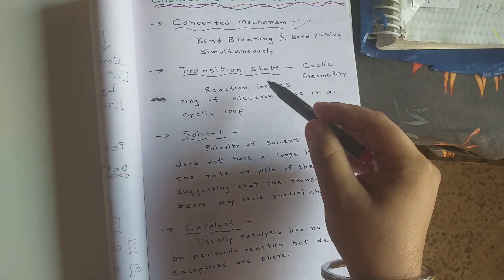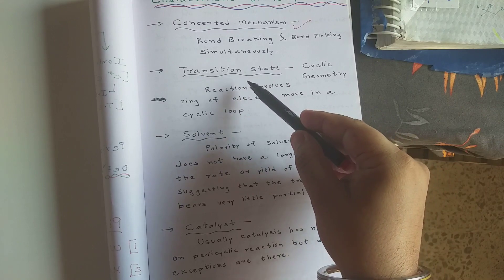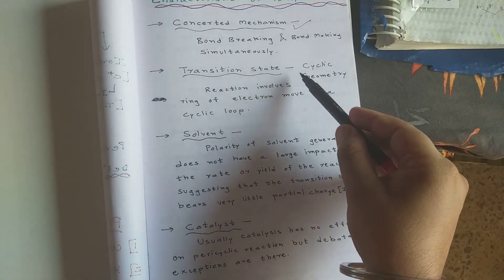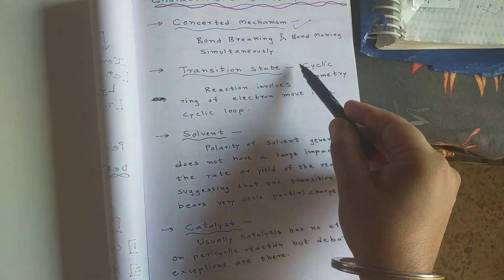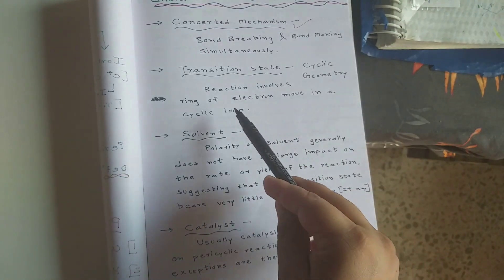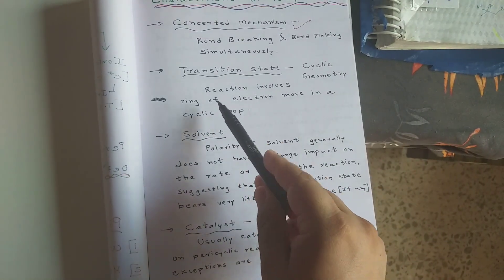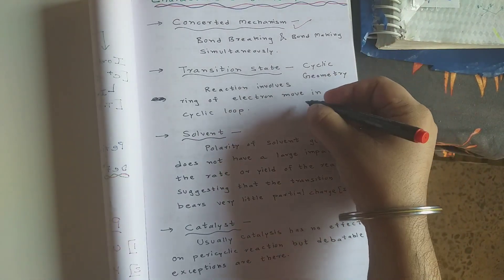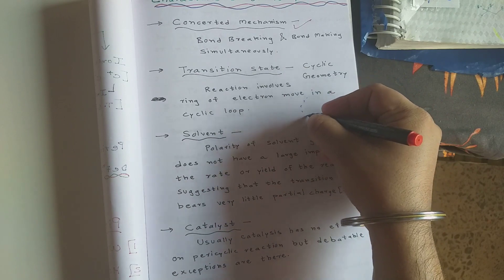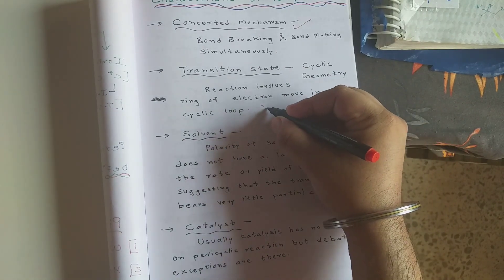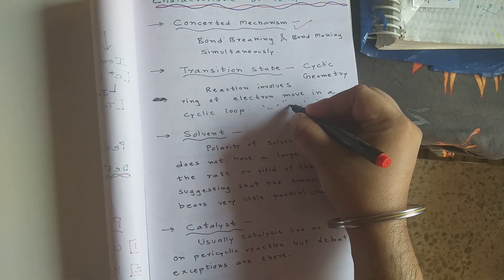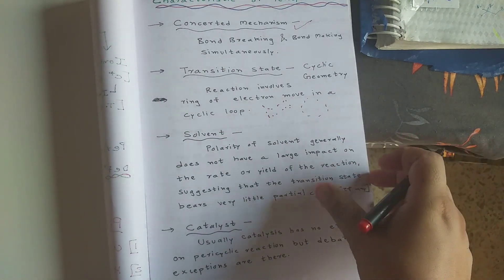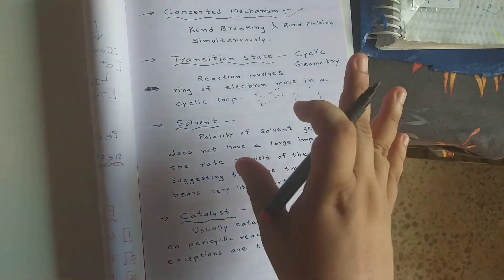The second characteristic concerns the transition state. In pericyclic reactions, the geometry of the transition state is always cyclic, and the reaction involves a ring of electrons moving in a cyclic way — a cyclic shift of electrons. This cyclic nature is key.